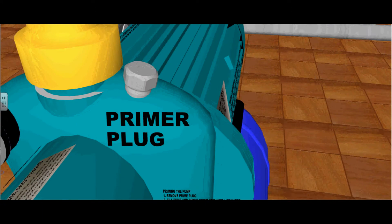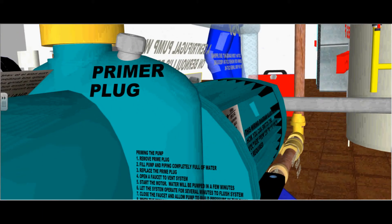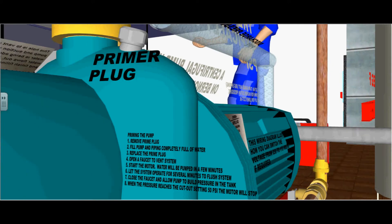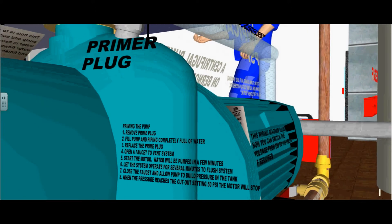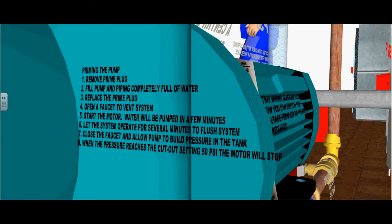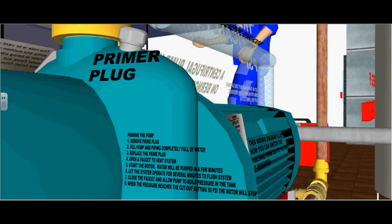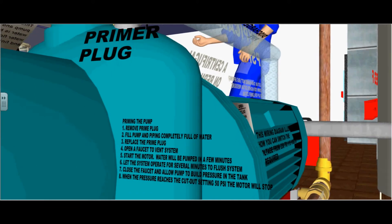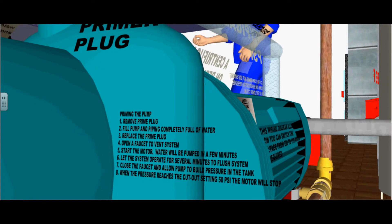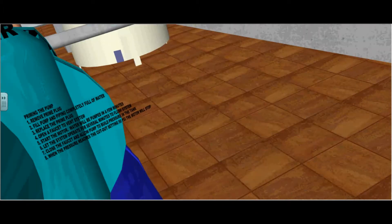Here is the primer plug. So if you want to prime your pump on new installation, you remove the prime plug, fill the pump and piping completely full of water, replace the prime plug, open a faucet to vent the system, start the motor. Water will be pumped in a few minutes. Let the system operate for several minutes to flush the system. Close the faucet and allow the pump to build up pressure in the tank. When the pressure reaches the cutout switch or cutout setting of 50 psi, the motor will stop.